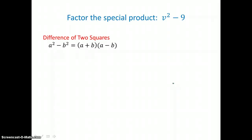Another special product looks like this. We're going to factor v squared minus 9, which is the difference of two perfect squares. When I factor this binomial, it will factor into a binomial times a binomial. I want to factor v squared into v times v, and 9 into 3 times 3, but now the signs have to be plus and minus. I factor this difference of two perfect squares into the sum and difference of the square roots of those two terms. Checking by distributing: v times v is v squared, v times negative 3 is negative 3v.